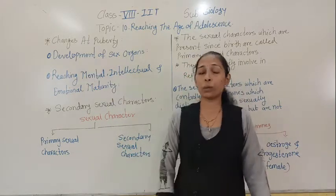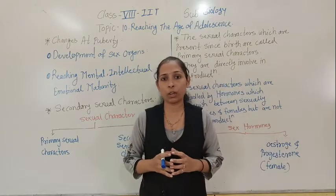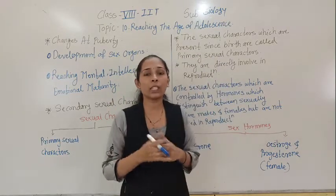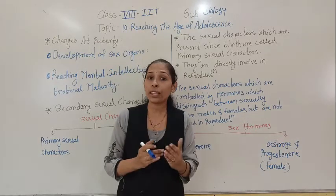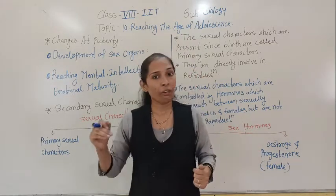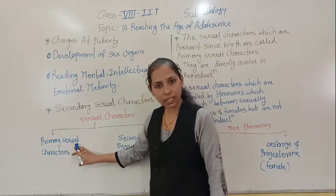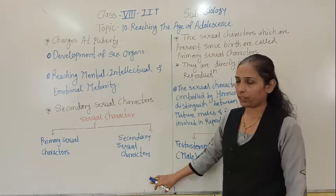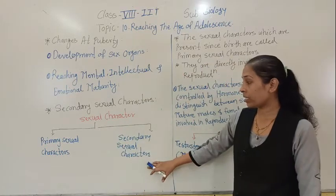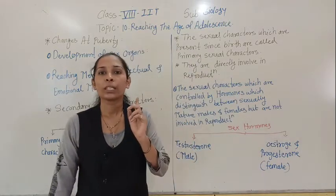We have discussed that male and female reproductive organs both have a vital role in the process of reproduction. So with the help of sex organs we can distinguish between male and female. But along with these sexual organs, there are certain sexual characters which help us to distinguish between male and female. There are two types of sexual characters: primary sexual characters and secondary sexual characters.